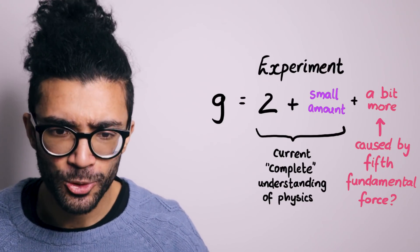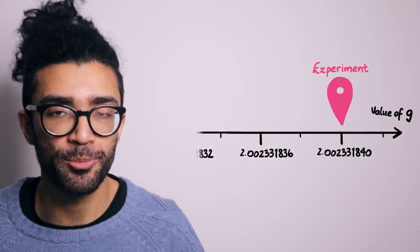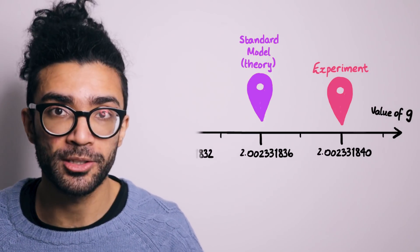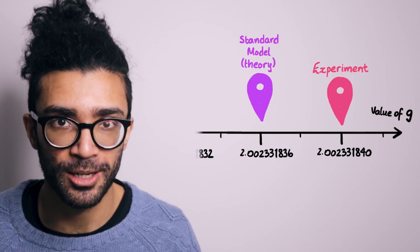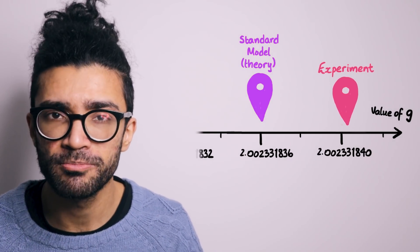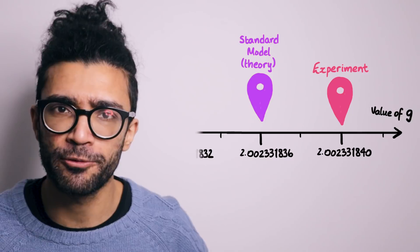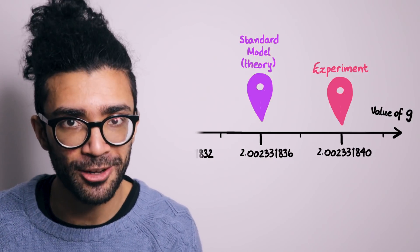So exactly how different do these two values need to be, the experimentally measured value and our theoretical expectation based on all of the physics that we know, in order for us to say, hang on, these values look quite different. Maybe they look different enough that there's some physics we haven't accounted for.